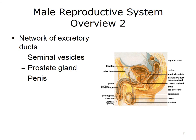Seminal vesicles are two structures lying behind the bladder. They are connected to the vas deferens and secrete a thick fluid that forms part of the semen. The prostate gland is about the size of a walnut and produces part of the seminal fluid that carries sperm. The prostate gland surrounds the neck of the bladder and urethra. The penis is the male organ of copulation and urination.